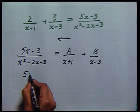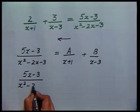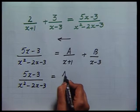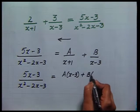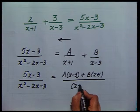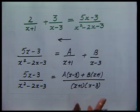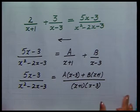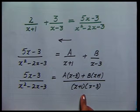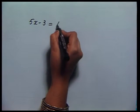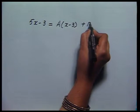Therefore, (5x-3)/(x²-2x-3) equals [A(x-3) + B(x+1)] / [(x+1)(x-3)]. Using algebra to combine the right-hand side, since both expressions have the same denominator, the numerators should be equal. Therefore, 5x-3 should equal A(x-3) + B(x+1) — a condition which is true for all values of x. We want to find the exact values of A and B such that this breakup holds.